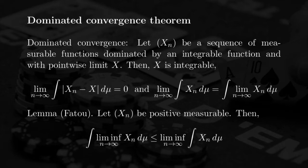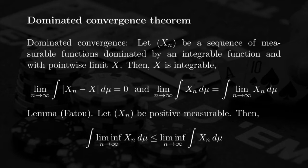Now, under the statement of the theorem, I also state a lemma — another important result in measure theory called Fatou's lemma — which is the first step to prove the dominated convergence theorem. It states that if you have a sequence of positive measurable functions, then the integral of the lim-inf of Xn is less than or equal to the lim-inf of the integral. This is again about inversion of limit and integral, but we use the lim-inf because there is nothing that guarantees convergence of Xn, yet we can still define the lim-inf, and instead of an equation we have an inequality.